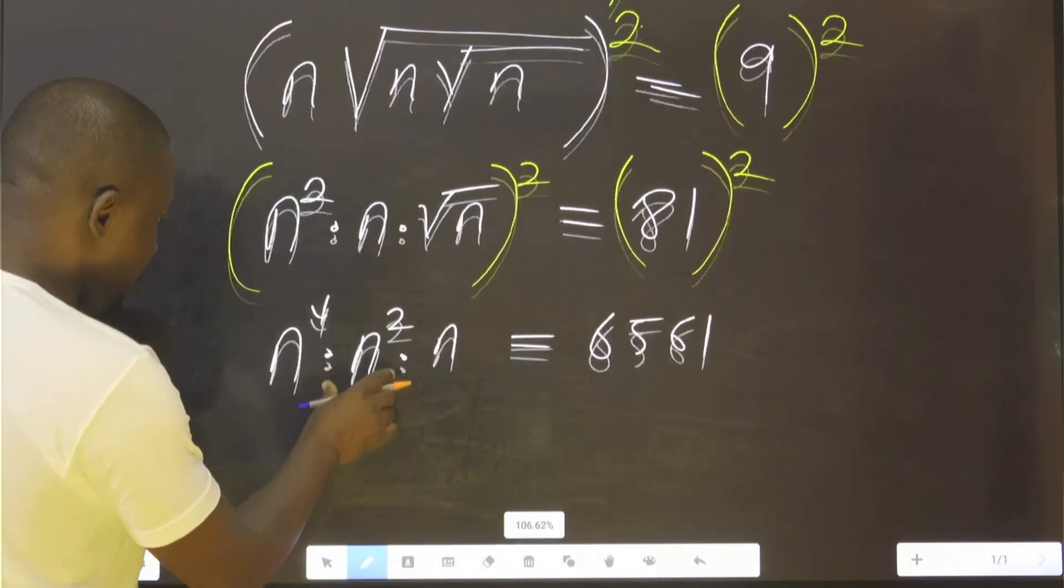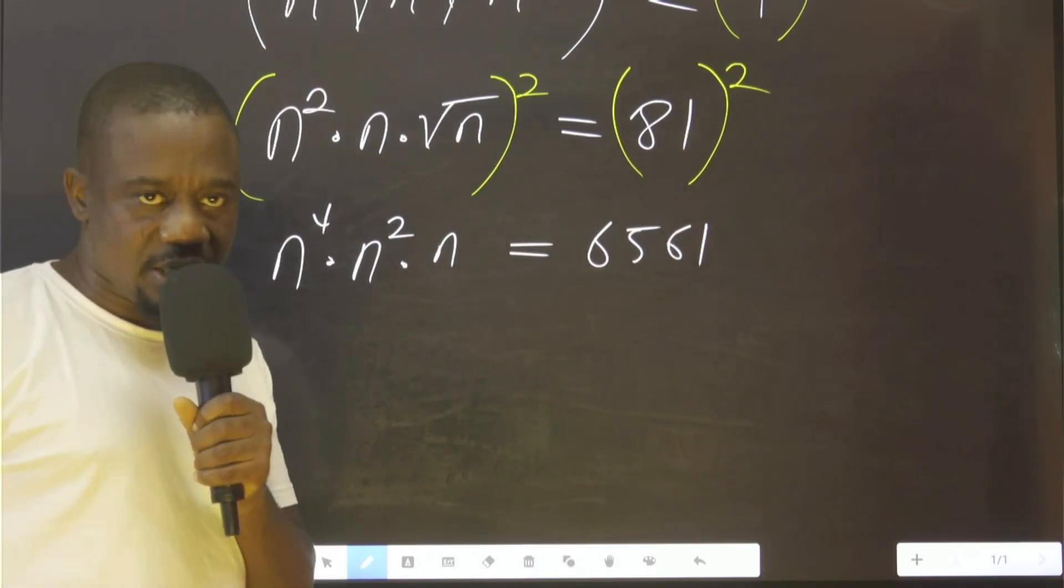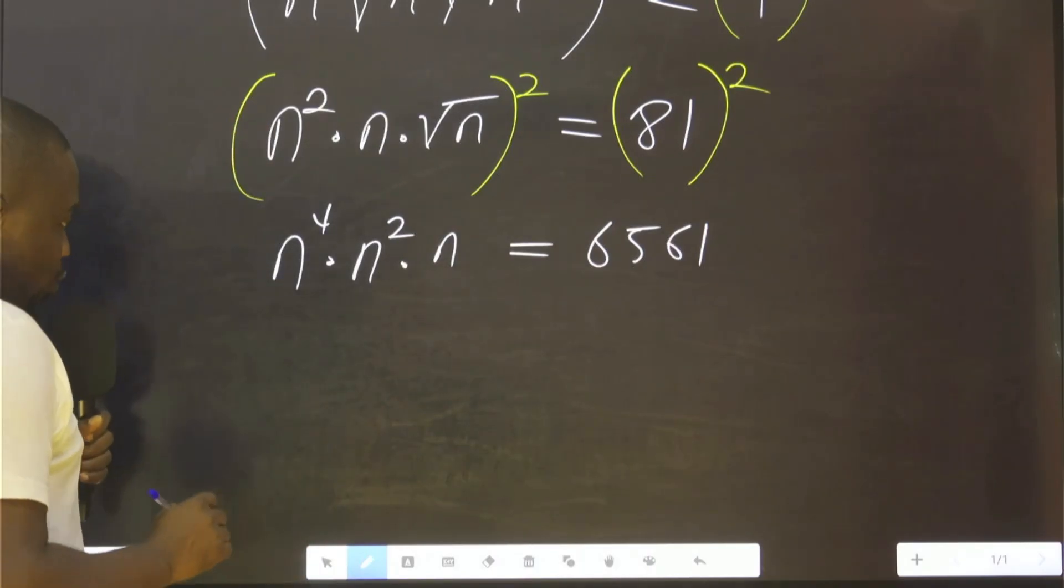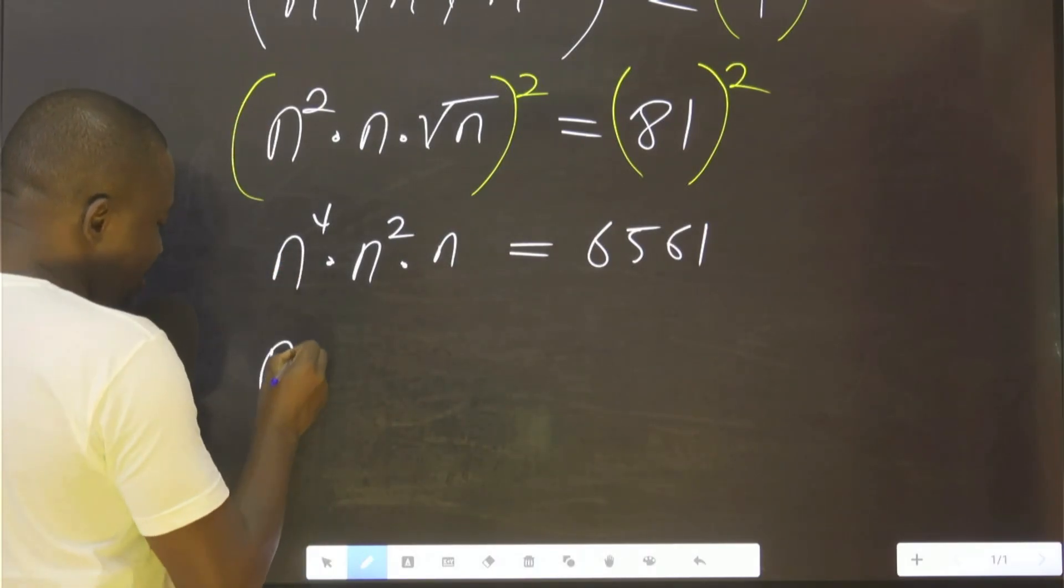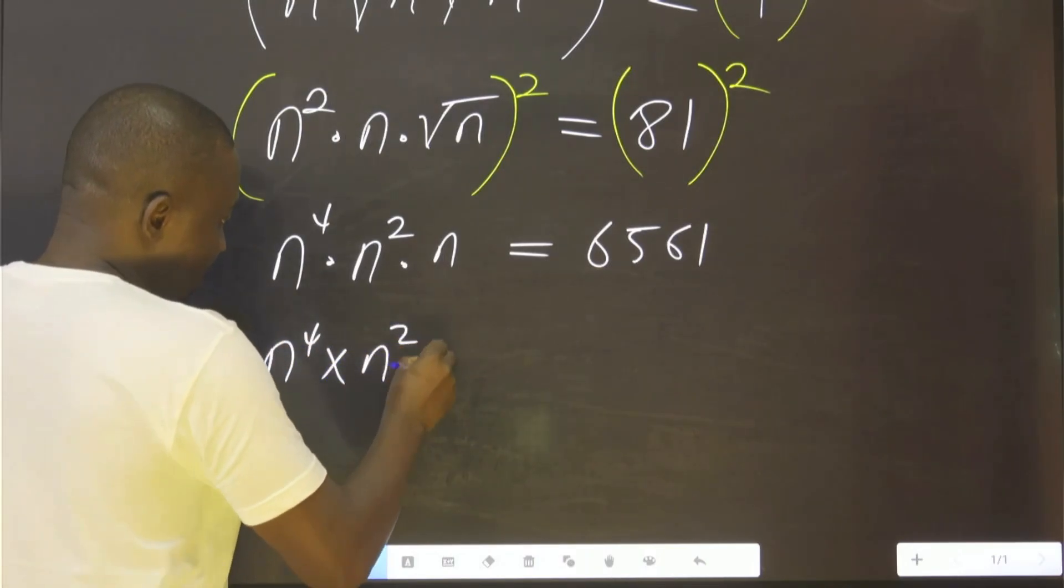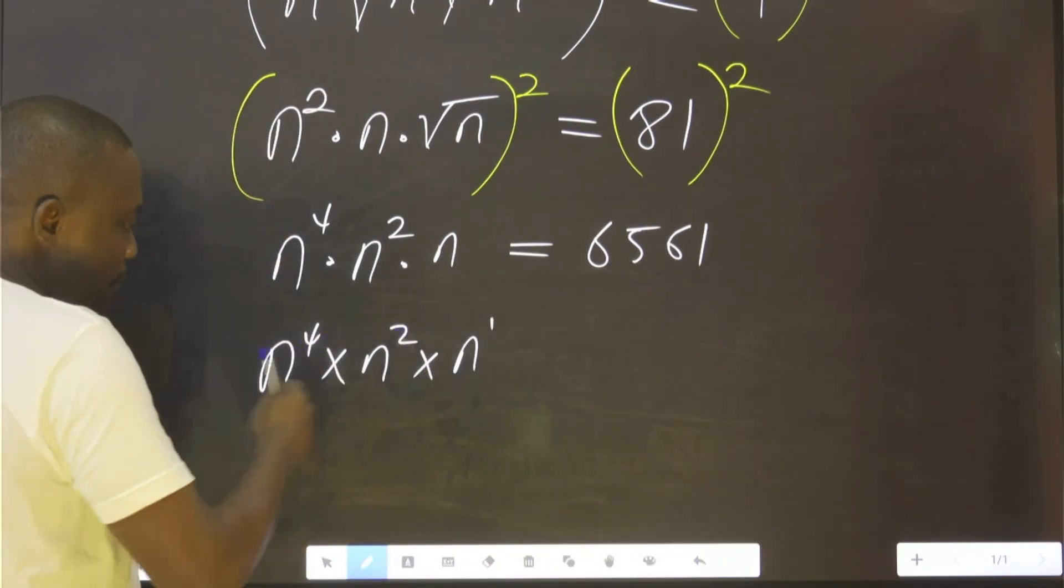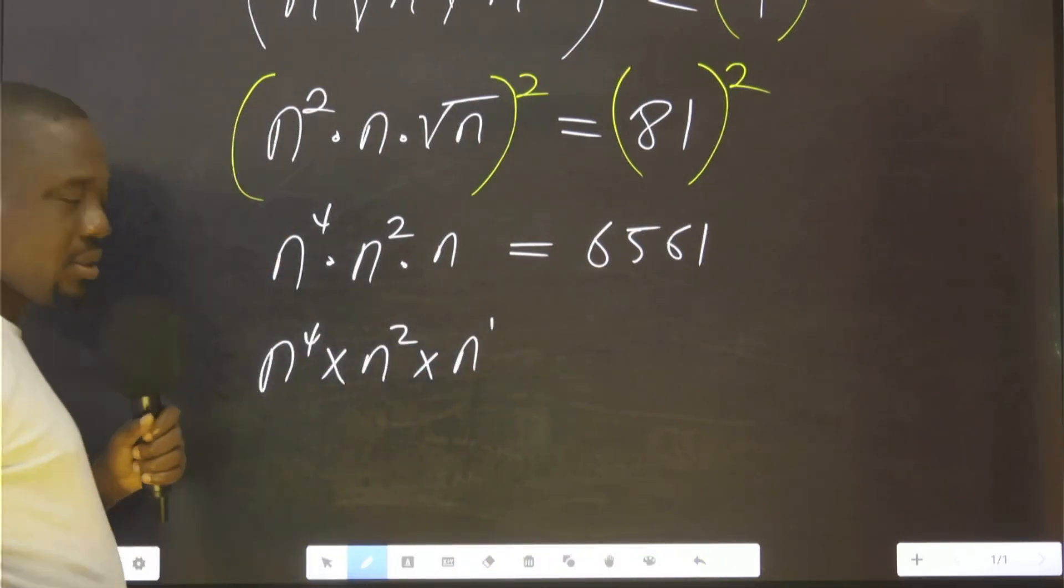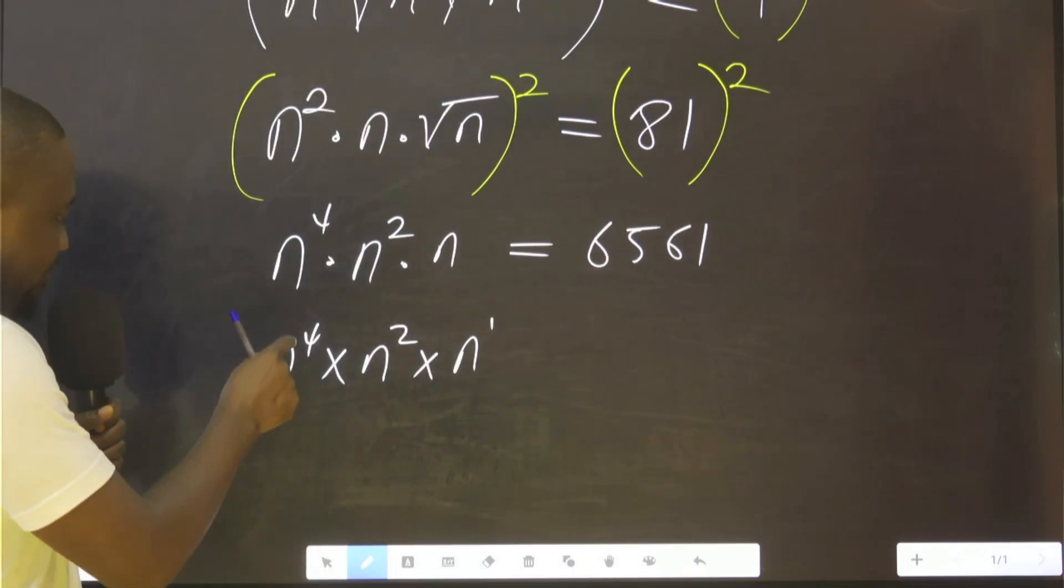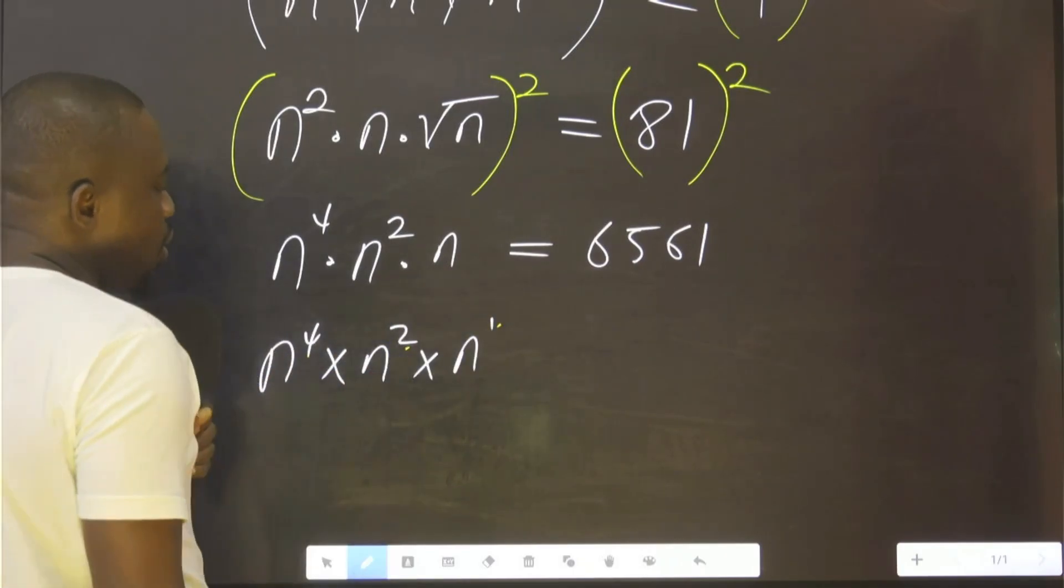So with this now, we use one of the laws of indices. Which says that what? If you have something like this, this is raised to the power 1. When the bases are the same, you can add the power. That is 4 plus 2 plus 1, will give us 7.